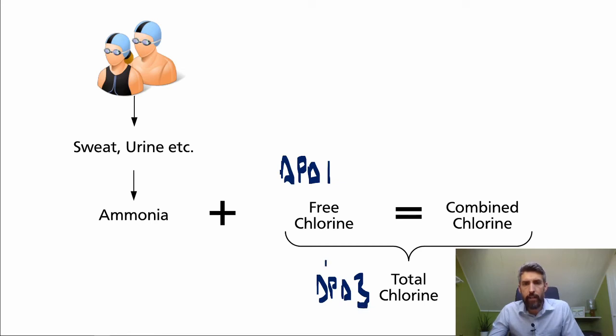It's the difference between the two that will tell you what the combined chlorine level is. So, for example, if we measured the free chlorine with a DPD-1 tablet and we got a reading of 1.5 for the free chlorine, and then we went on to test the total chlorine reading and we got a result of 2, then we'd be able to establish that there is a level of 0.5 of the combined chlorine. So the combined chlorine is the difference.